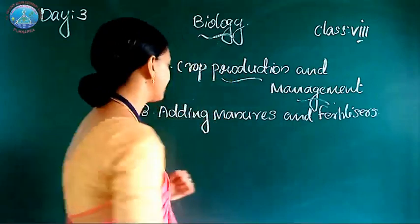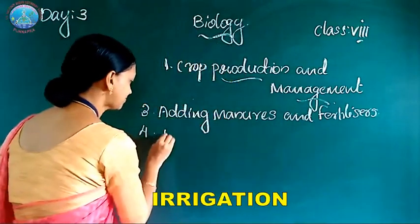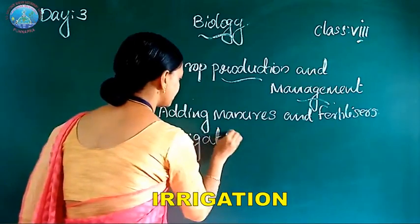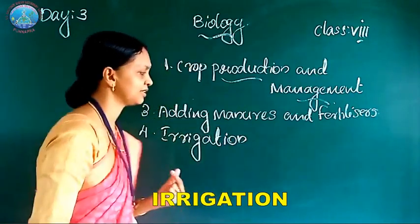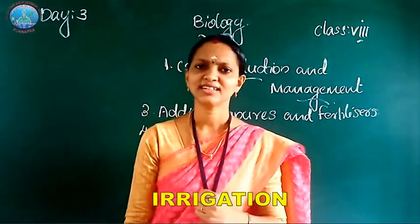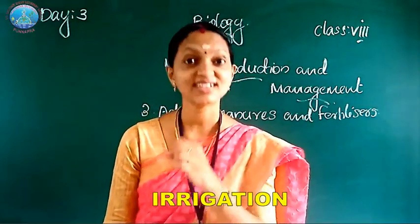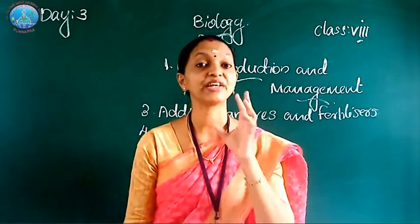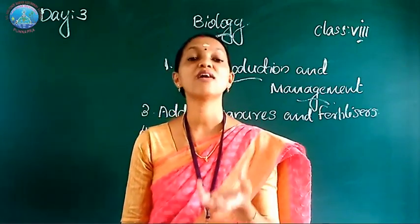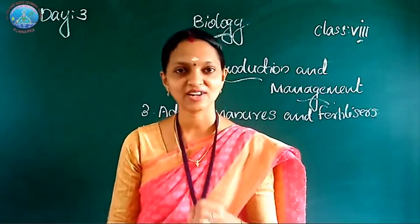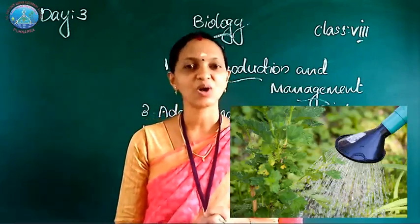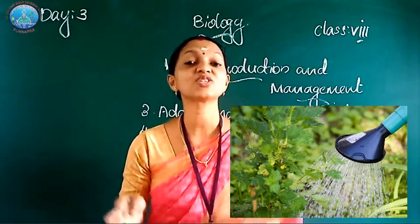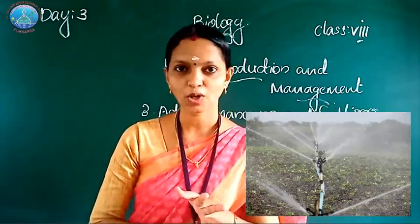The next step is irrigation. What is irrigation? The supply of water to the plants at regular intervals over a period of time is called irrigation. Irrigation varies from crop to crop.